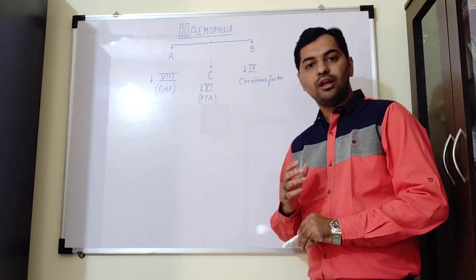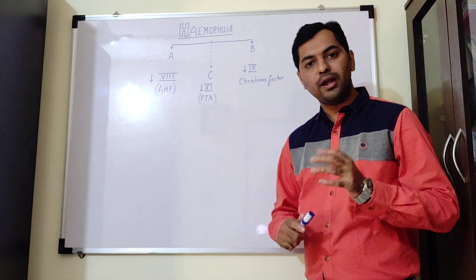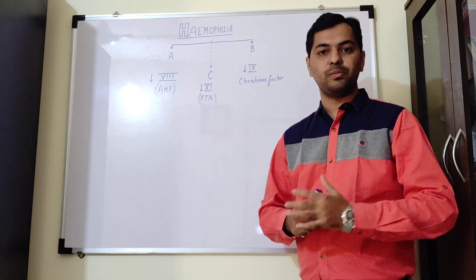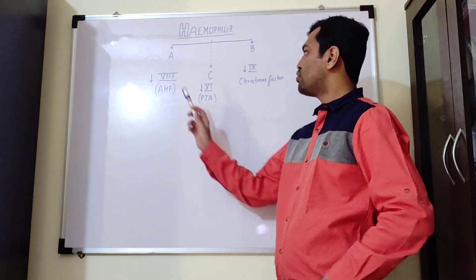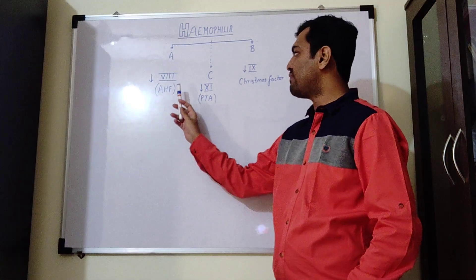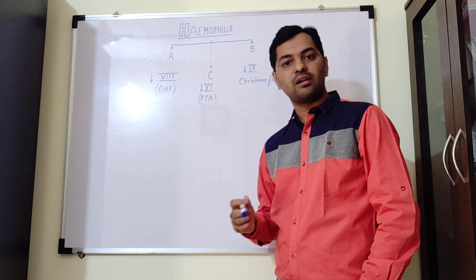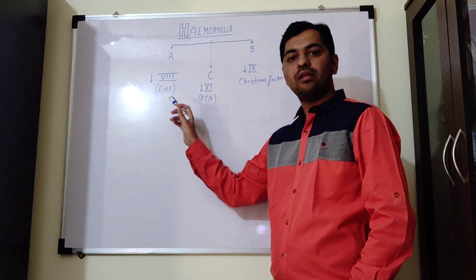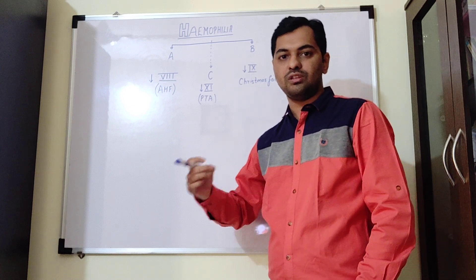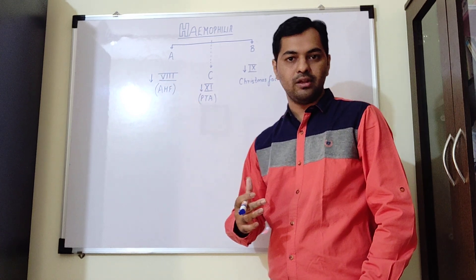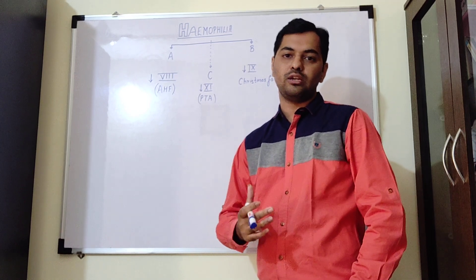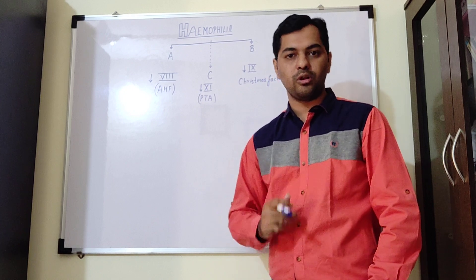Hemophilia has been classified into different types depending on the type of clotting factor which has been found deficient in the patient. One type is hemophilia A. In hemophilia A, there is deficiency of clotting factor 8. Clotting factor 8 is known as AHF, that is anti-hemophilic factor. Due to the deficiency of this, the coagulation cascade or pathway gets inhibited, which does not lead to the healing process being performed properly.